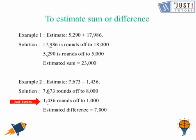So this number rounds off to 1,000 because we need to round down. Now the difference between 8,000 and 1,000 is 7,000.